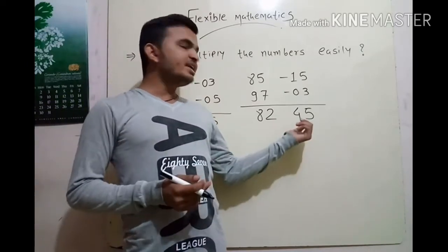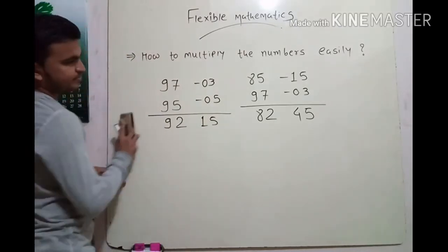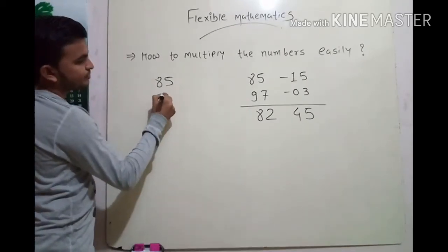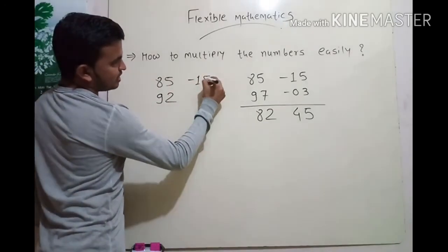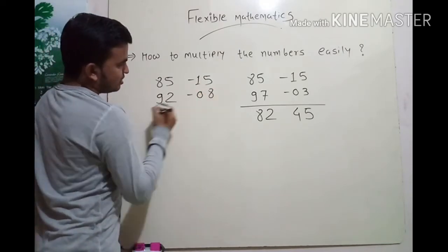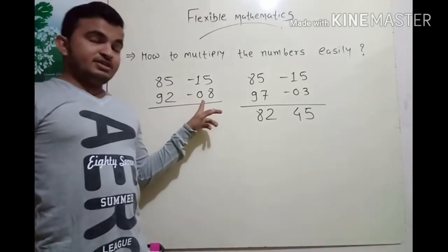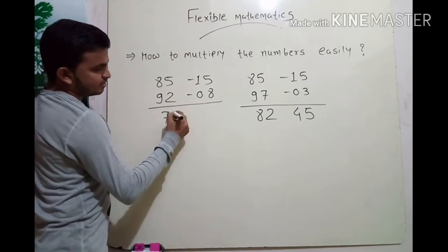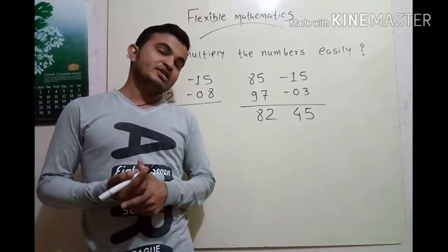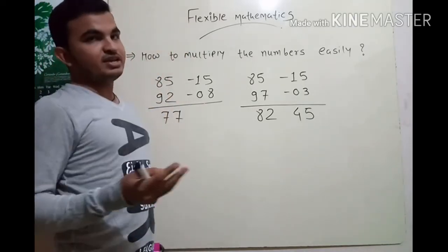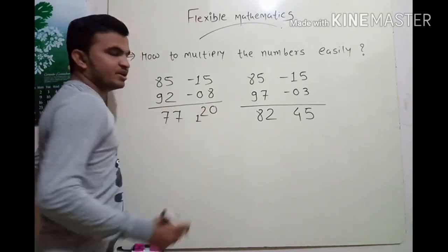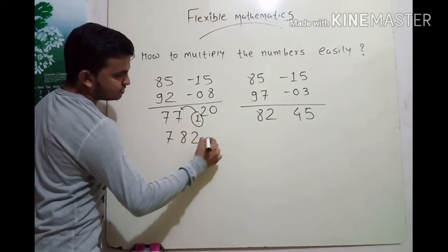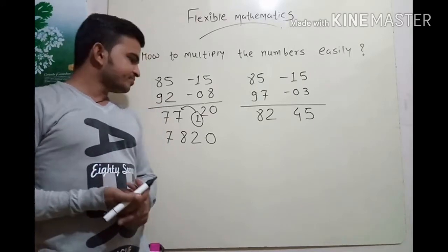When we are getting three digits in the product of the deficits, what to do? Let's take 85 and 92. Now 85 is less than 100 by minus 15, and 92 is less than 100 by minus 8. Cross subtraction: 85 minus 8 or 92 minus 15, you get 77. But if we multiply 15 and 8, we get 120 — three digits — and we only require two digits. So the extra 1 of 120 is carried over. The answer becomes 77 plus 1 equals 78, and the remaining two digits are 20. So the final answer is 7820.